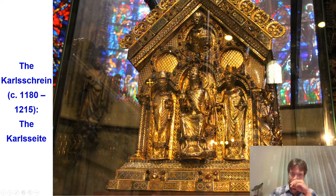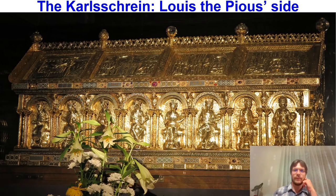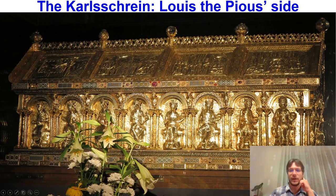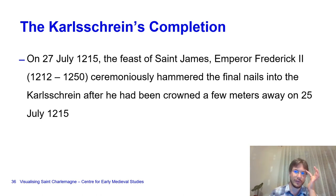This is what it looks like. Christ, two missing figures, the seated Charlemagne, Pope Leo III, and Archbishop Turpin of Reims appear on the frontal side. The longer side is called the side of Louis the Pious, and the roof reliefs depict the life of Charlemagne. The Karl Shrine was completed on the 27th of July 1215—the Feast of St. James—when Emperor Frederick II, grandson of Frederick Barbarossa, ceremoniously hammered the final nails into the Karl Shrine, having been crowned just two days earlier on the 25th of July 1215. He then had a crusade proclaimed and preached.